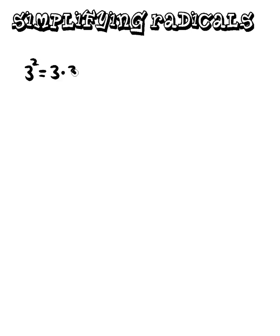So what we have here is Simplifying Radicals, and we're going to start by asking the question: what is a radical? Basically, a radical is the opposite of squaring. So if I were to take the number 3 squared — what is 3 squared, or 3 to the second power? That's the same as 3 times 3, and the answer is 9. So that's what the basic radical is — it's the inverse of squaring.